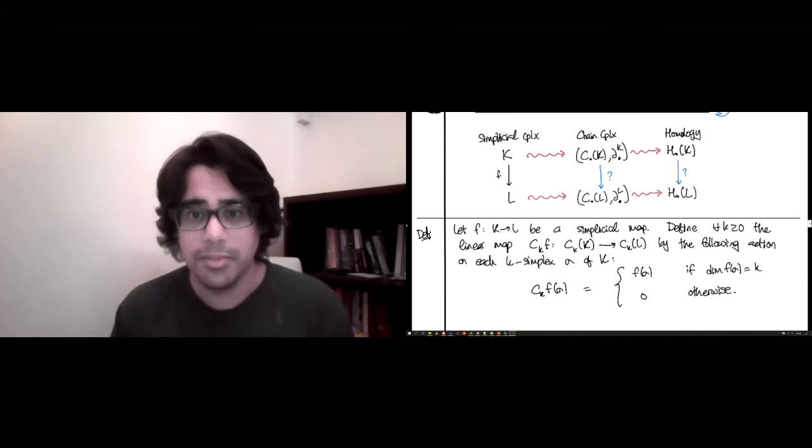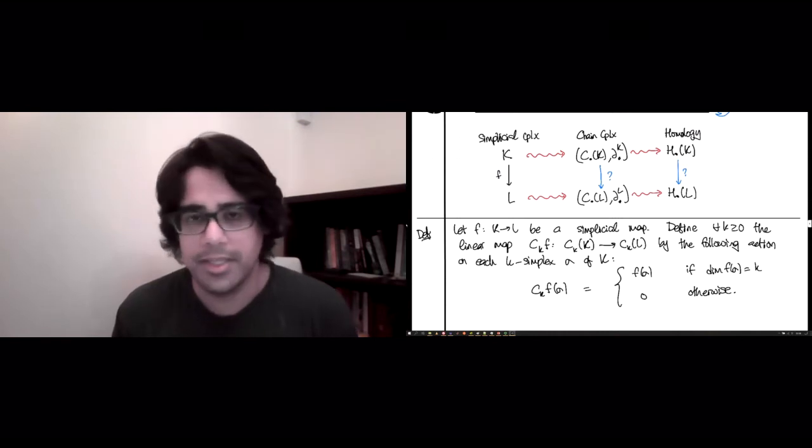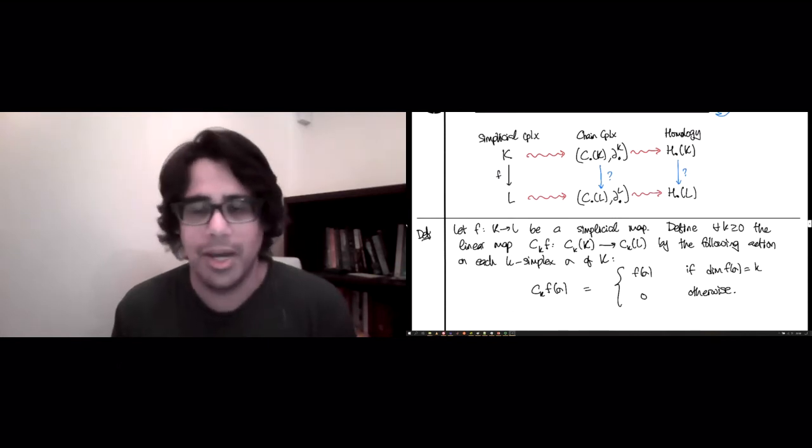And so those simplices where you lost a dimension don't form basis elements of the k chains in L. They form basis elements of some smaller part, some smaller c_{k-1} or k-2. And so we ignore those.